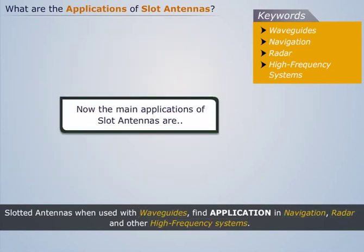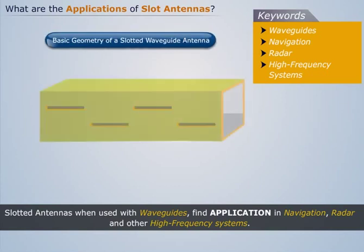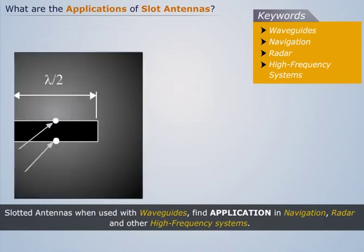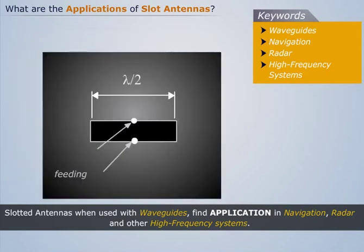The main applications of slot antennas are as follows. Slot antennas are mainly used in the frequency range from 300 MHz to 25 GHz. They are used in navigation radar, usually as an array fed by a waveguide. The polarization of slot antennas is linear and they are lambda by 2 long, which determines the resonant frequency for navigation purposes.